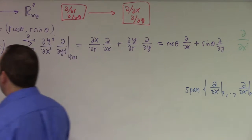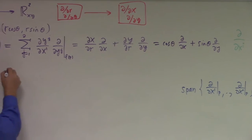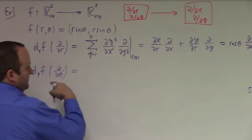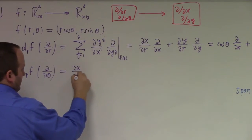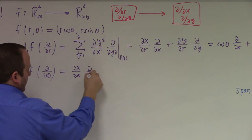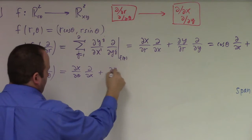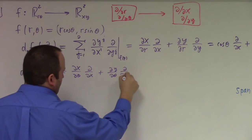And what's the push forward of the theta derivation? You can count and guess. It's partial x over partial theta times partial partial x, plus partial y over partial theta times partial partial y.